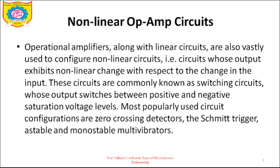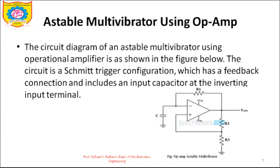The Schmitt trigger is also one of the non-linear circuits. Most popularly used circuit configurations are zero crossing detectors, also called ZCDs, Schmitt trigger, and astable and monostable multivibrators. In this lecture we will talk about the astable multivibrator using op-amp. We have already studied the astable multivibrator using the 555 timer IC. Astable means it does not have any stable state, and it is also called a free running multivibrator.